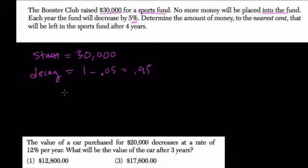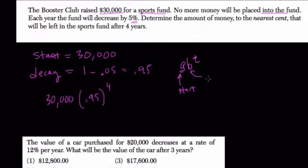Determine the amount of money to the nearest cent that will be left in the sport fund after 4 years. So you take 30,000, your start value, times your decay factor to the power of years that have passed. In general, A times B to the T, right? Where A is your start, that number here. B is your growth or decay factor. And T is the time period required, whatever it is, for growth or decay.